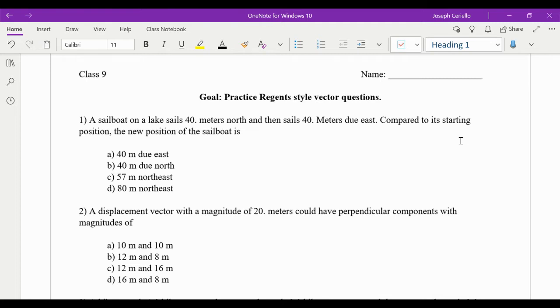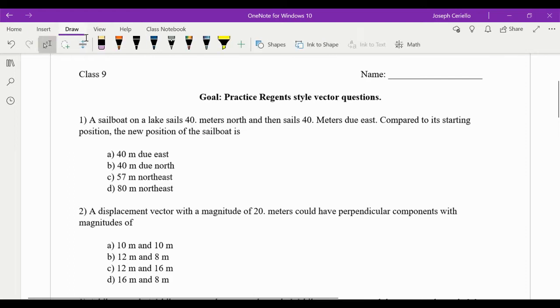So a sailboat on a lake sails 40 meters north, so let's start out with that. So 40 meters north looks something like this. Label it. And then 40 meters east. So you have an east vector, make it tip to tail with the north vector, and that's going east. Your resultant goes from the tail of the first vector to the tip of the second, something like that. And that's where you end up. That's how far you are from where you started. How do you solve for that though?